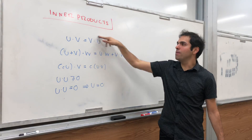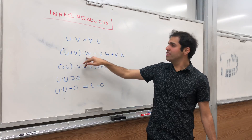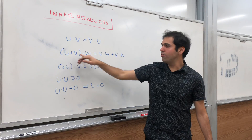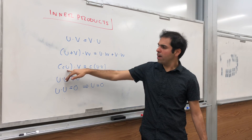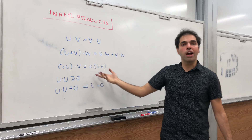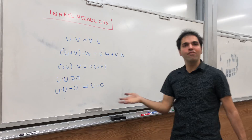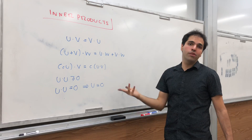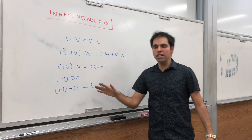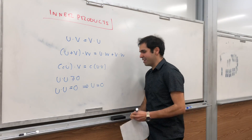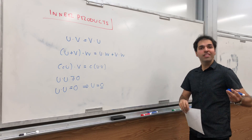I'm doing this on real space — for complex numbers you'd put a conjugate bar here, but not today. You also have a distributive property, so you can expand dot products, and if you multiply u by a scalar you can pull that number out. Lastly, u dot u is greater than or equal to zero, and u dot u equals zero only if u is the zero vector.